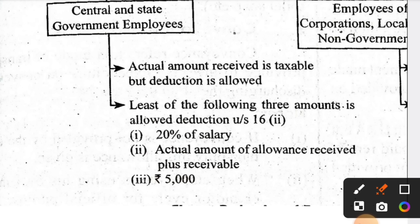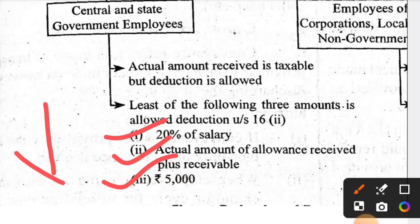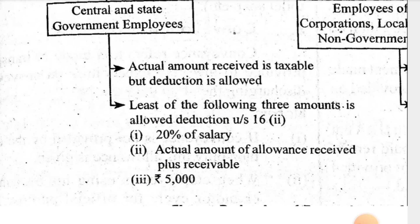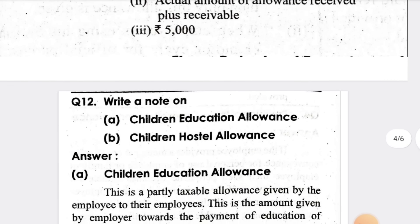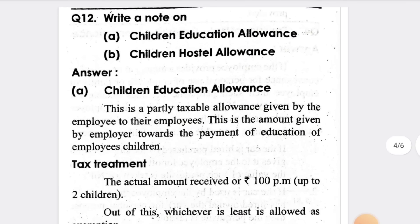The next important thing you need to know is entertainment allowance deduction under Section 16. If it appears, we need to find it in three steps: first, 20% of salary — where salary means basic pay only. If basic pay is ₹1 lakh, calculate 20% of that. Second, the actual amount of entertainment allowance received. Third, the default amount of ₹5,000. Whichever is the least among these three is the entertainment allowance deduction.